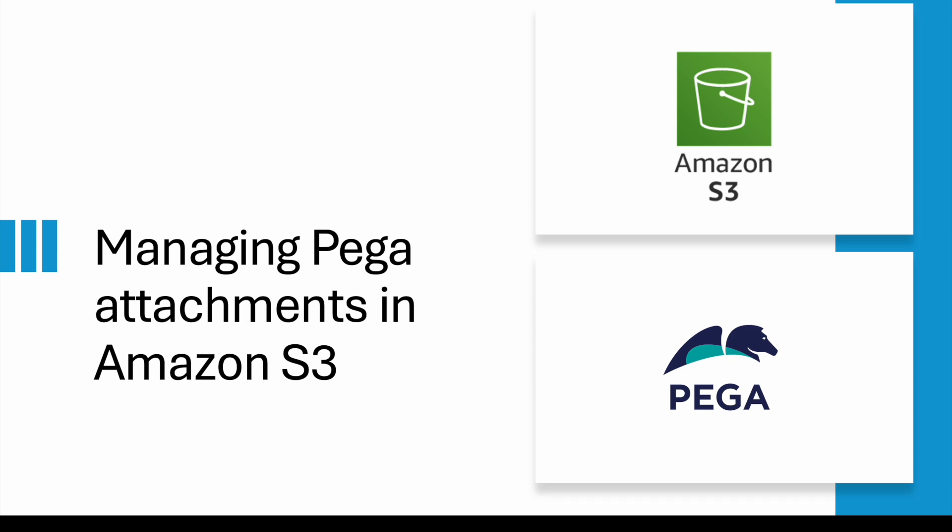By default, if you do not make any changes and try to upload any document to the Pega case, it gets saved to the Pega database. But sometimes, depending on the client, we need to save the data to a different repository. It could be Amazon S3, Azure, JFrog, a local repository, or other options. Today we are going to learn with S3.